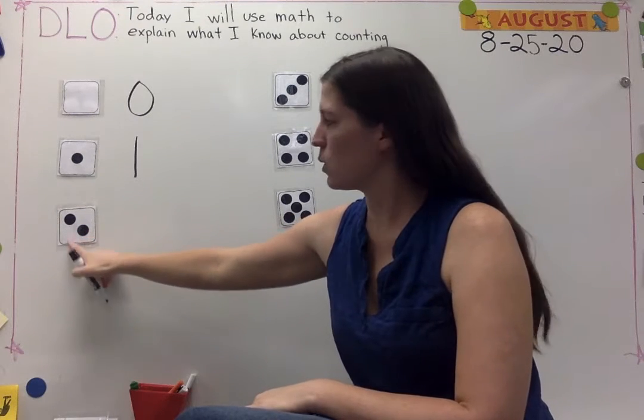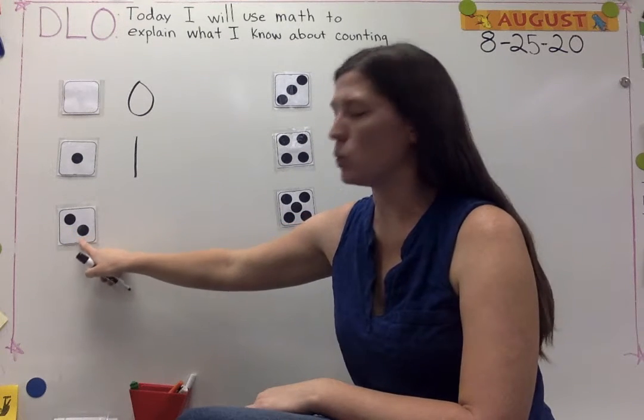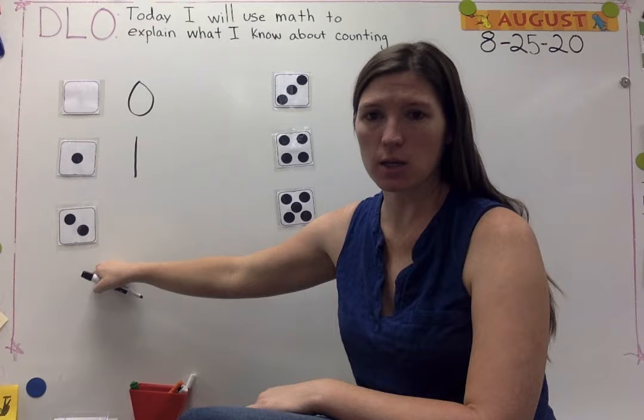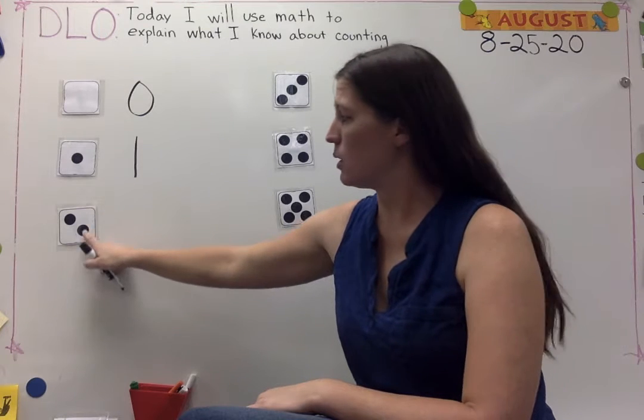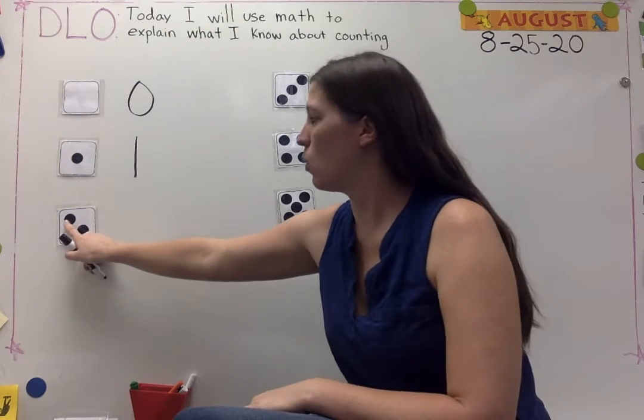Let's go to the next one. Let's count them. One, two. How many dots are there? Two. The number of how many there are is the last one that you count.